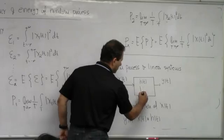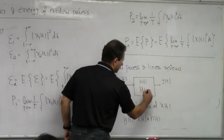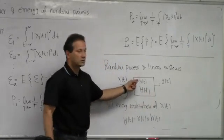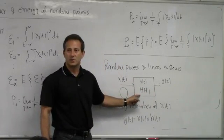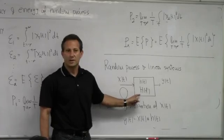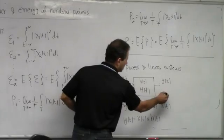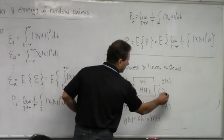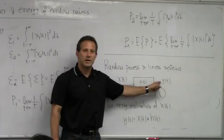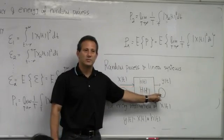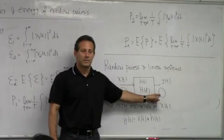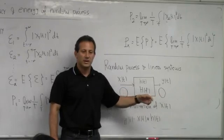This one I'm okay with. I know that to the impulse response I can attach the frequency response, which are Fourier transform pairs. And then I need a descriptor here that tells me how do I characterize my output random process in a frequency domain.